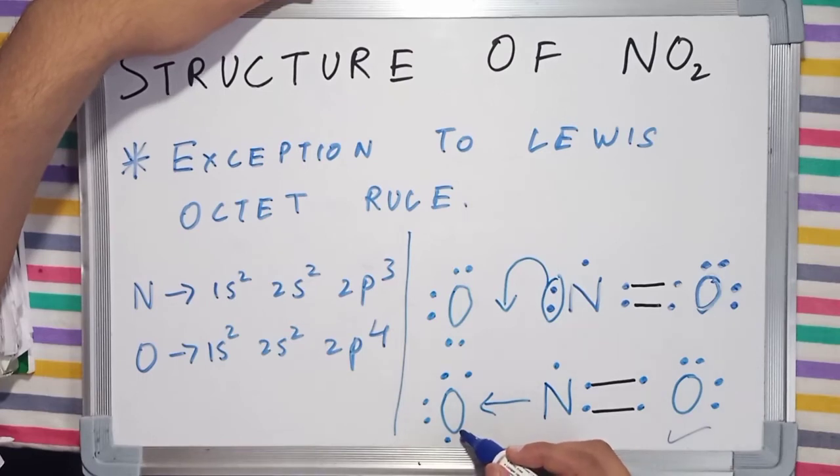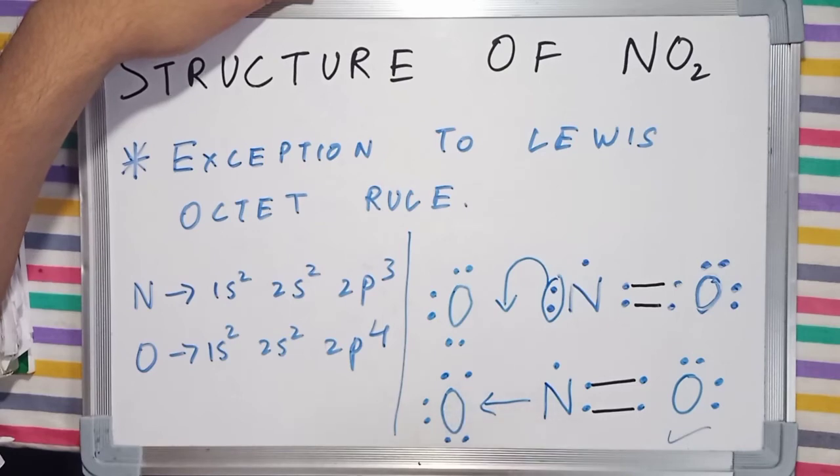If you want to calculate the number of valence electrons in this oxygen, it will be 1, 2, 3, 4, 5, 6, 7, 8. Because this is a coordinate bond and will also be counted in the valence shell of this particular oxygen. But nitrogen in nitrogen dioxide or the NO2 molecule just has 7 electrons in its valence shell. And hence, it defies Lewis octet rule.